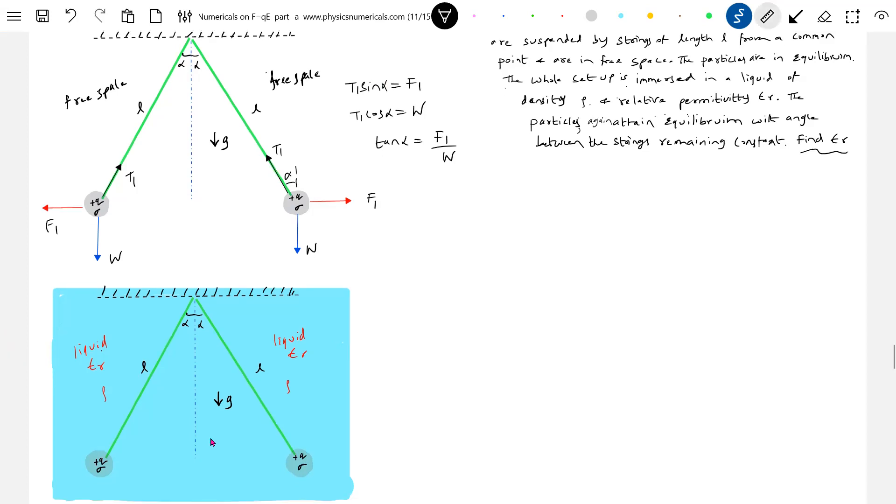Let's come to the second situation. From the second diagram, the electrostatic force acting will be given by this. Then the weight, then the tension T2. The angle between them remains the same, so this will still be alpha. Now the new electrostatic force, let it be F2, apparent weight W dash.